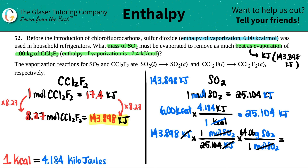Moles cancel out and now I have my answer for the mass required. The calculation is 143.898 divided by 25.104, then times 64.06. We only need 367 grams of SO2. That's roughly a third of the 1000 grams — the one kilogram — that was required for the CCl2F2. So the mass of SO2 that needs to be evaporated to remove the same heat as 1 kg of CCl2F2 is 367 grams.